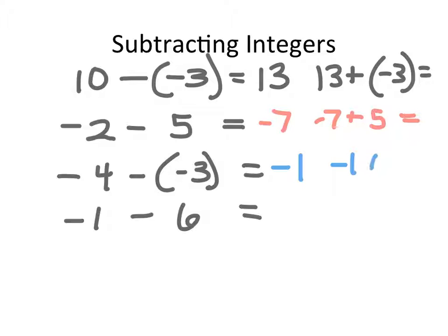Negative 1 plus negative 3 equals negative 4. In the next problem, I'm already short 1 — negative 1 — and I'm going to take away 6 more. If I'm already short 1 and I take away 6 more, I'm going to be short 7. And if I check with the reverse operation, negative 7 plus 6 equals negative 1.